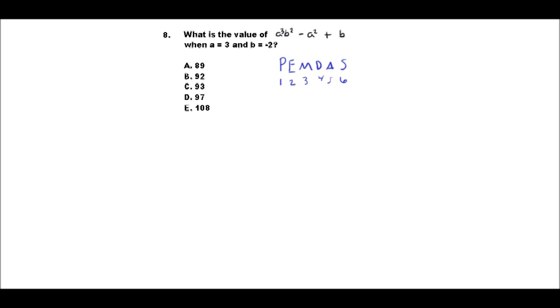If I'm going to plug in some values here, I know that a equals 3, so that's 3³ times b². B is -2, so that's (-2)² minus a², and a is 3 again, so 3², and then plus b, which is -2. I'm going to put the parentheses here because it's nice to separate the two signs, plus and minus.